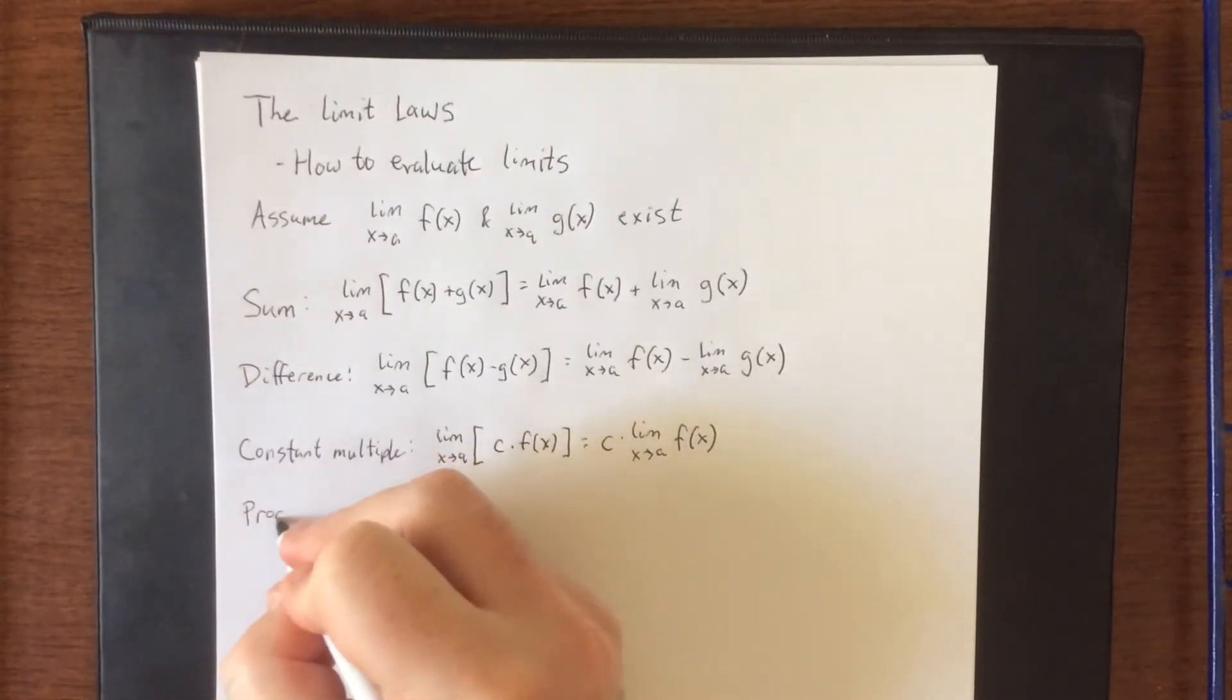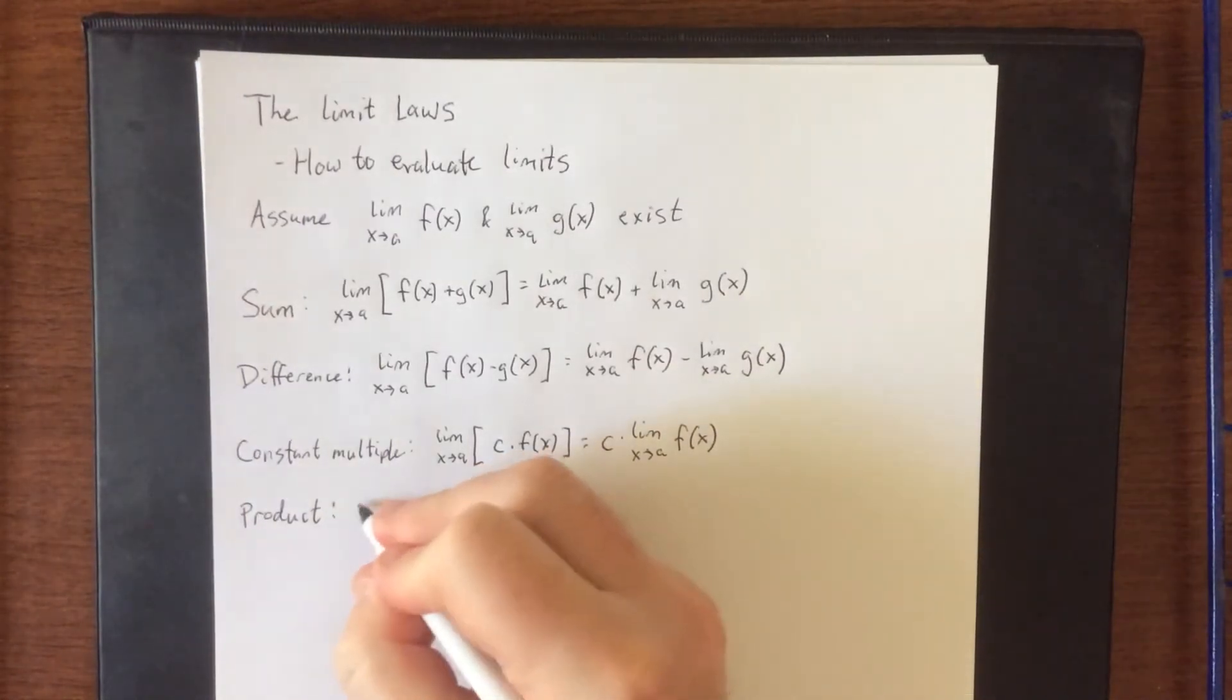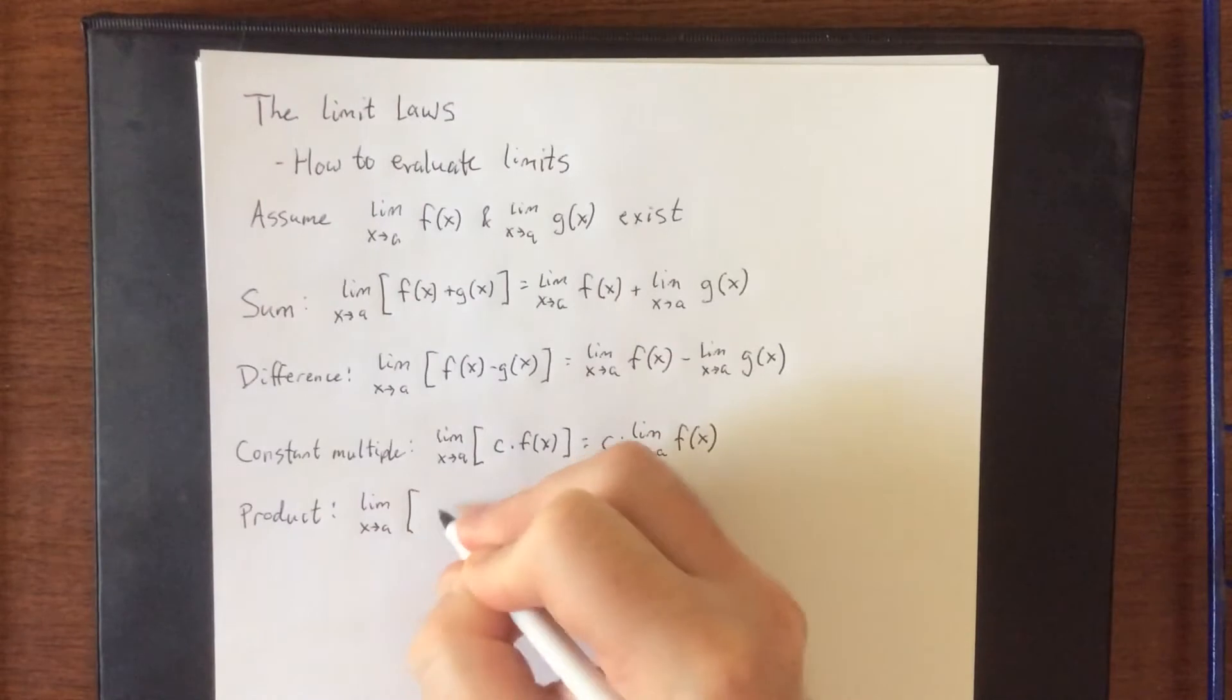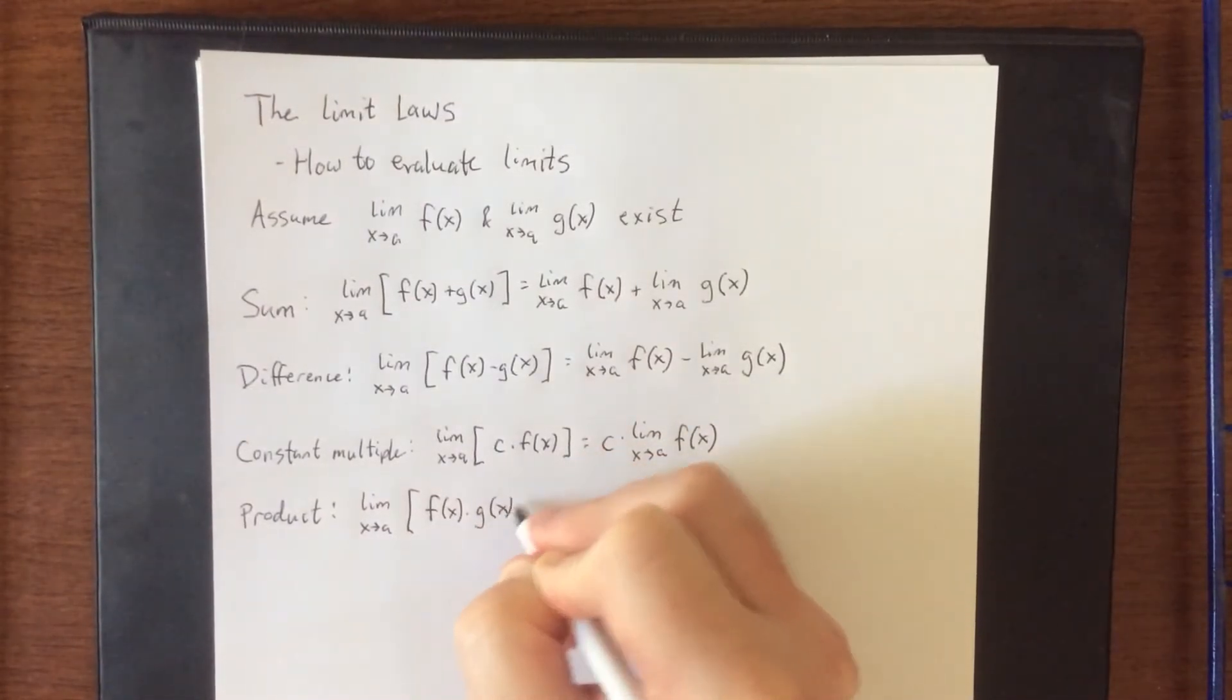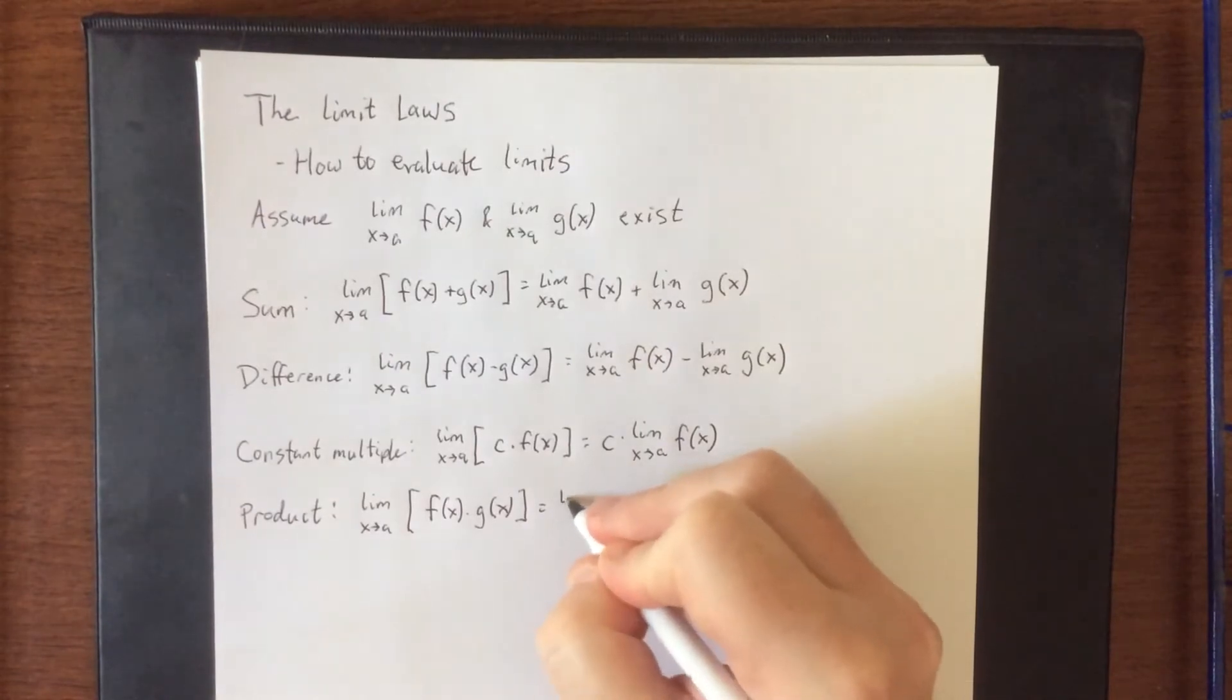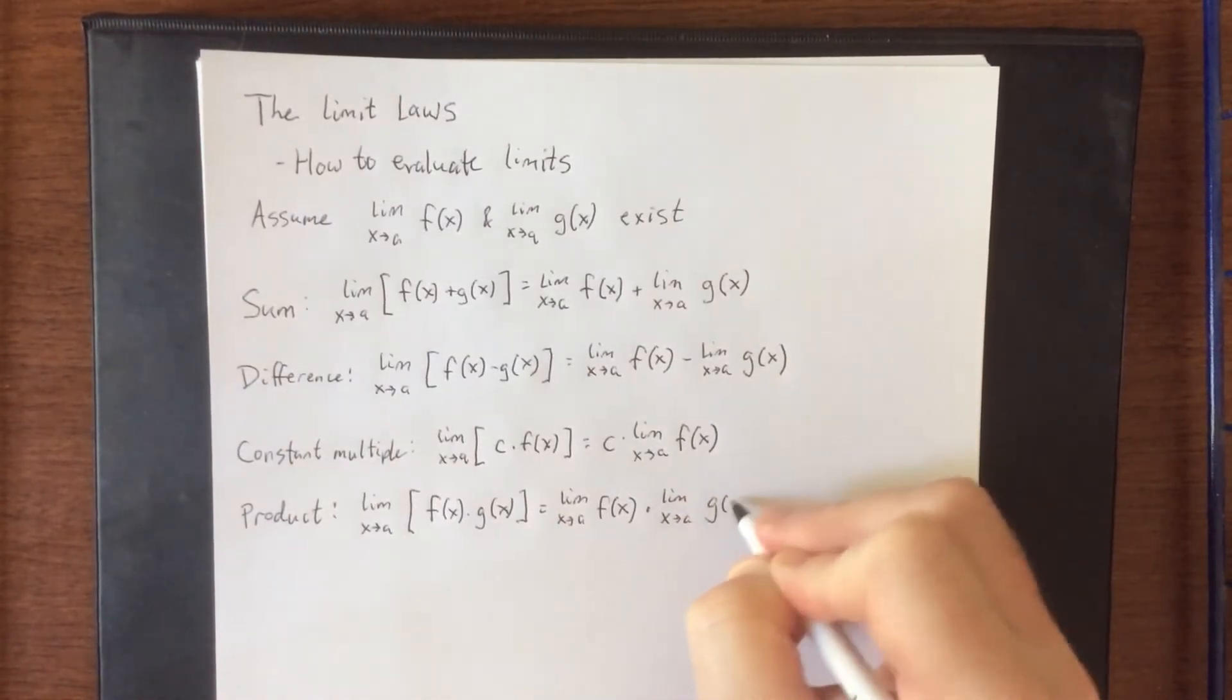The product law would apply to a product of two functions. It says that if you take the limit as x approaches a of f of x times g of x, then you can express this as the limit as x approaches a of the first function times the limit as x approaches a for the second function.